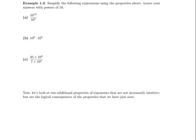Let's go ahead and work part A. In this example, we're dividing a power of 10 by another power of 10. According to the property above, we should have 10 to the 12 minus 7 — we subtract the exponents. This gives us 10 to the 5th. Let's look at part B. In part B, we're multiplying. When we multiply powers of 10, we add the exponents. So in this case, it would be 8 plus 6, which gives us 10 to the 14.